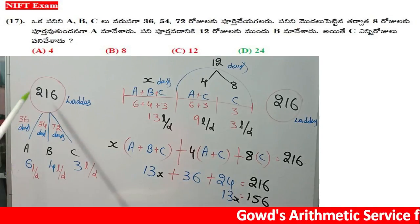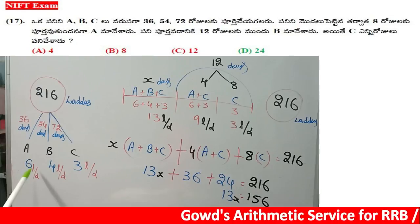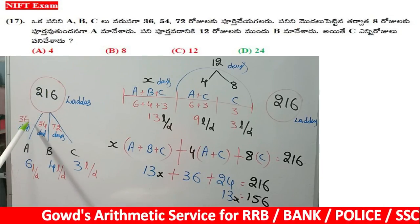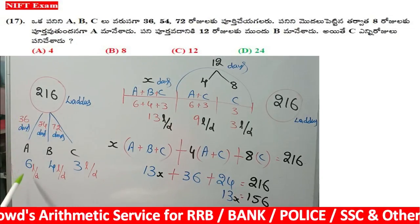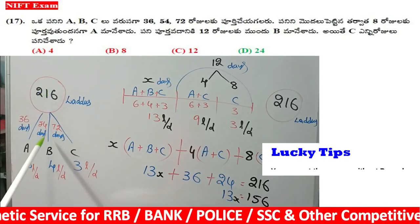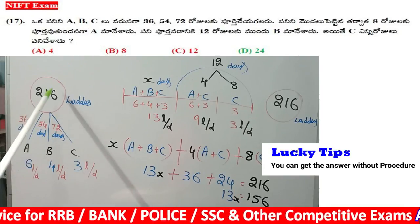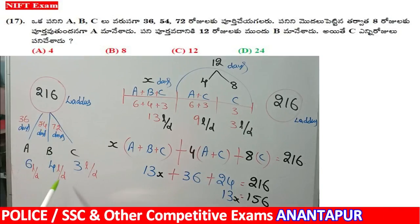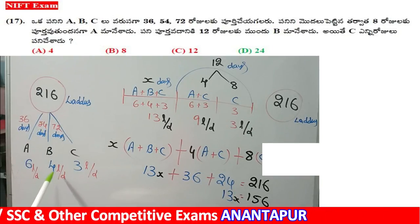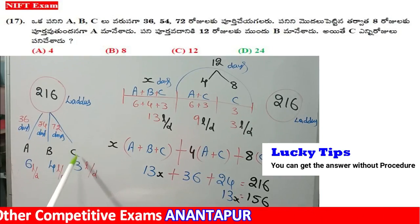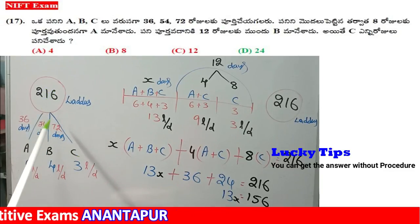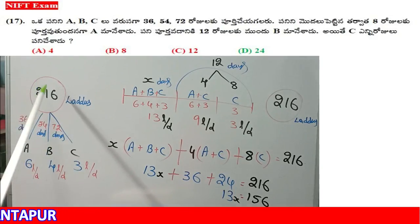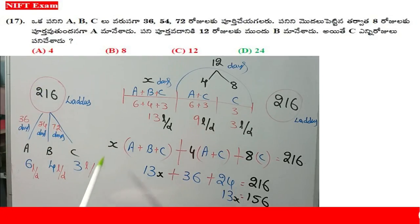So in one day, how many laddus? Total laddus divided by days — 216 total. In 54 days, 216 laddus. So 216 laddus — divided accordingly — 215 laddus, 7 apart from the book total. Okay.